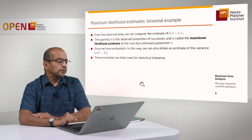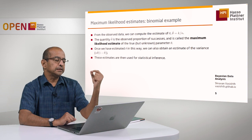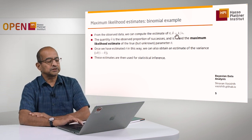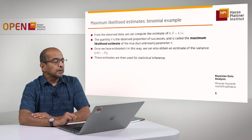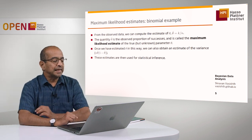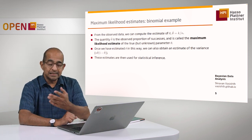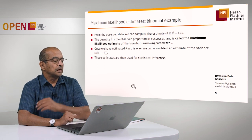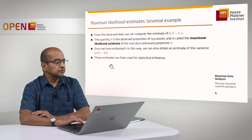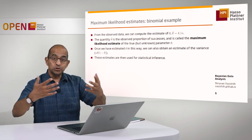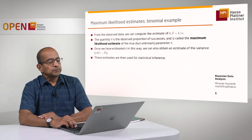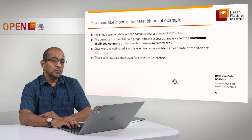If I have some observed data, I can compute the estimate of theta — that is, theta hat. In the binomial case it'd be k, the number of successes divided by the total number of trials. The quantity theta hat is called the maximum likelihood estimate of the true unknown parameter theta. We will never know what theta is, but we can estimate it from the data. Once we have estimated theta, we can calculate the variance as well, and these estimates are then used for statistical inference, hypothesis testing, and all that in frequentist statistics.